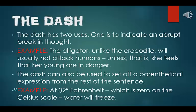The dash has two uses. One is to indicate an abrupt break in thought. Example: the alligator — unlike the crocodile — will usually not attack humans, unless, that is, she feels that her young are in danger. The dash can also be used to set off a parenthetical expression from the rest of the sentence. Example: at 32 Fahrenheit — which is zero on the Celsius scale — water will freeze.